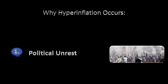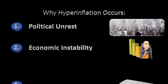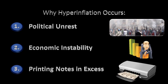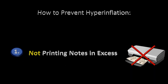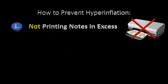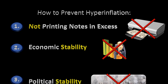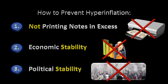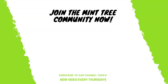So we understand that hyperinflation is mainly caused due to economic instability, political unrest, and printing notes in excess. To prevent hyperinflation, the government must not print excess bank notes even during economic slowdown, so that it only results in a recession rather than the ugly consequences of hyperinflation, which make living extremely difficult for the citizens of the country. Good economic policies along with a stable government can prevent this from happening as well. I hope that you liked this video — don't forget to subscribe and hit the notification bell so that you are updated every time I launch a new video. Thanks for watching.